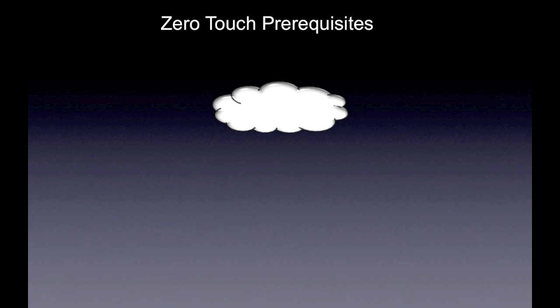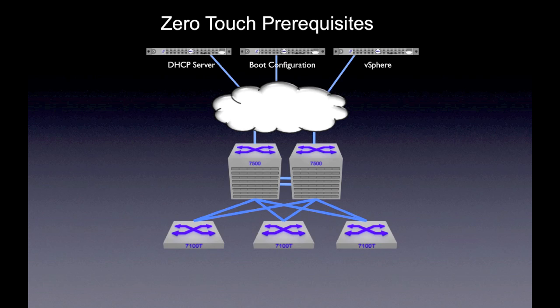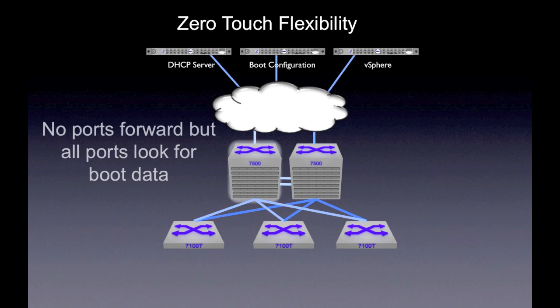ZTP uses common services for auto provisioning the switches. DHCP services the boot request, and boot servers provide configuration and image data. Working alongside VMware's vSphere, it's possible to fully provision the network and compute infrastructure with the help of ZTP. The switches simply need access to the provisioning sources — they'll broadcast a DHCP service request across all connected interfaces, but not forward traffic. This helps ensure that the network isn't accidentally disrupted with the switch's default configuration.